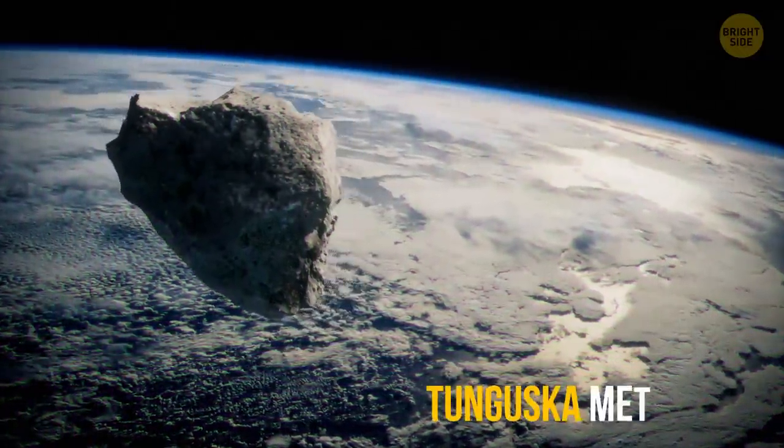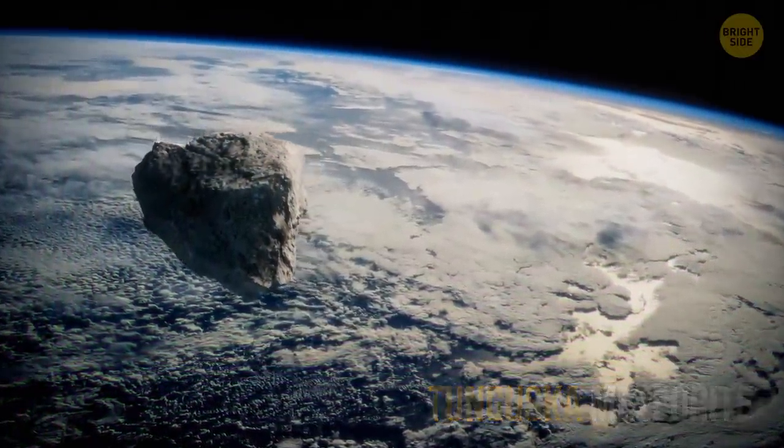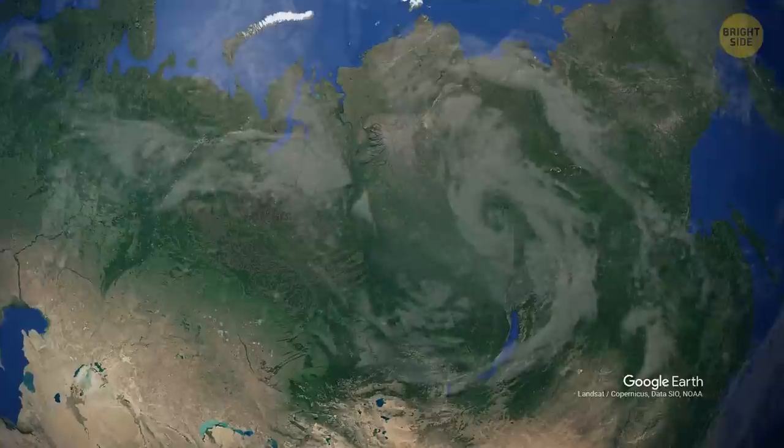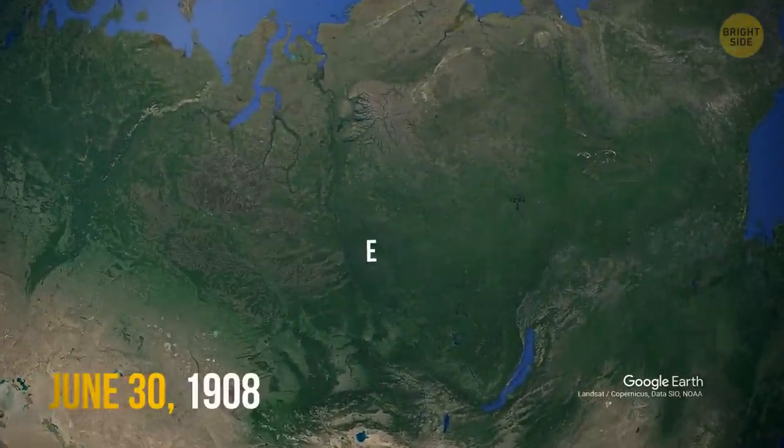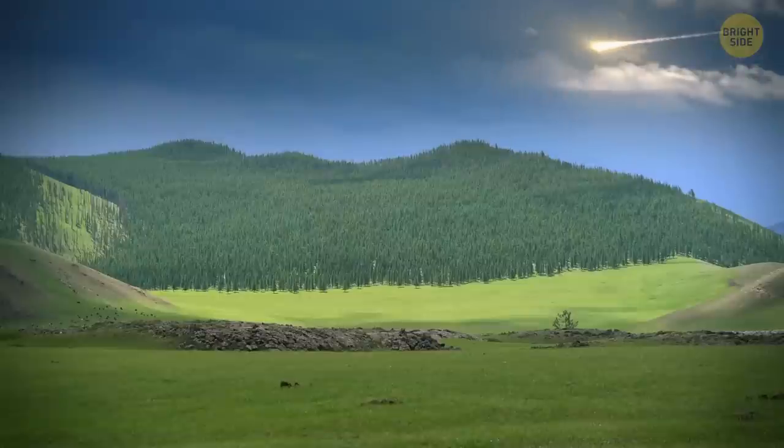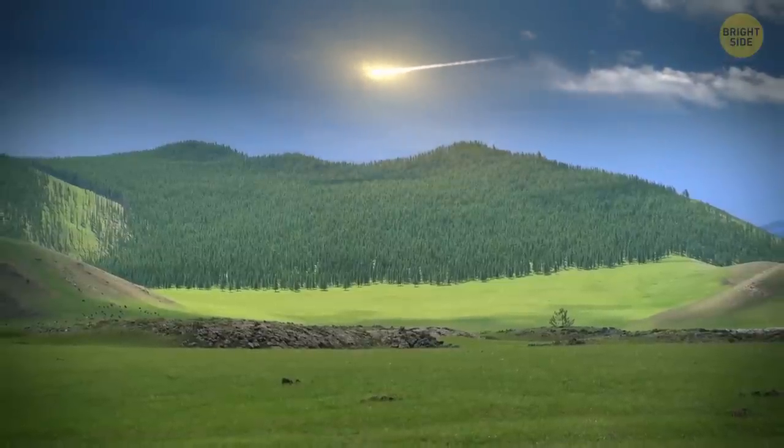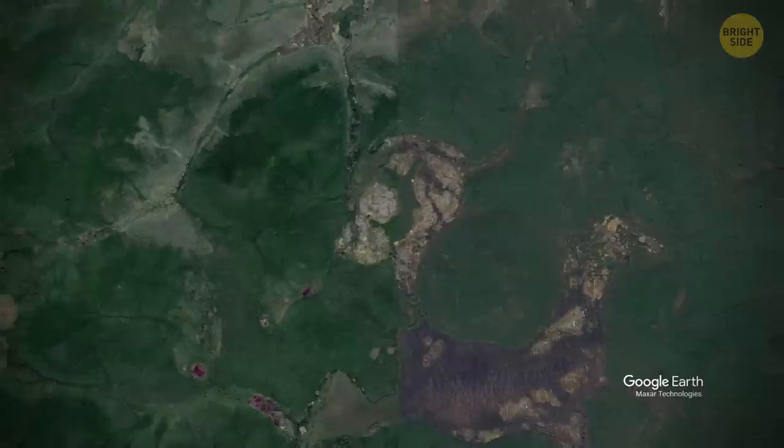Some people even witnessed such a meteorite land on our planet. The notorious Tunguska meteorite is the biggest asteroid disaster that people have ever seen. It all happened on June 30, 1908, in eastern Siberia. The meteorite was bright, like a second sun, and people felt the heat wave when it just approached the Earth.